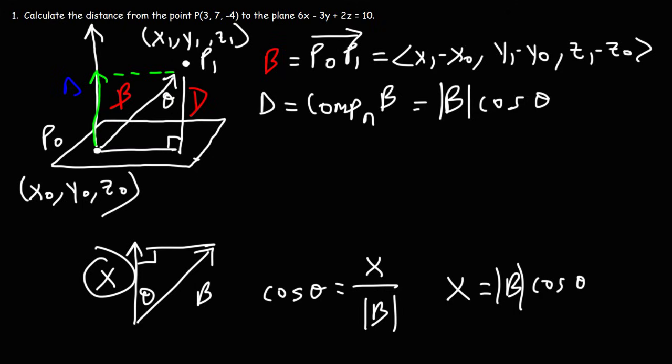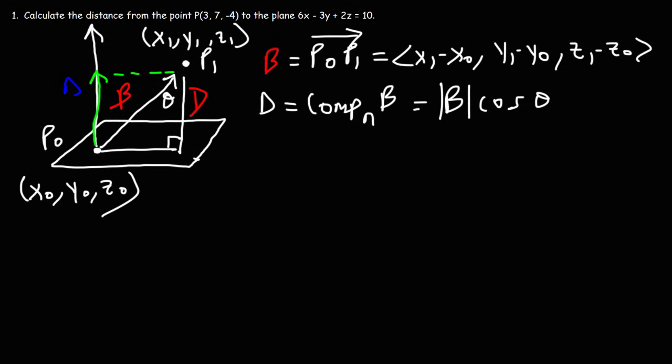So this part here is equal to what we see here, which is the length of the component of B that is parallel to N. So that's the scalar projection of B onto N. This is how you can find it, but we don't have an angle, so that's not going to work out for us. So let's talk about what we can do.